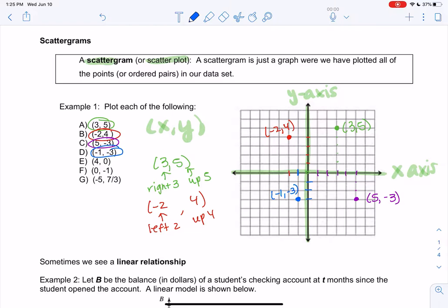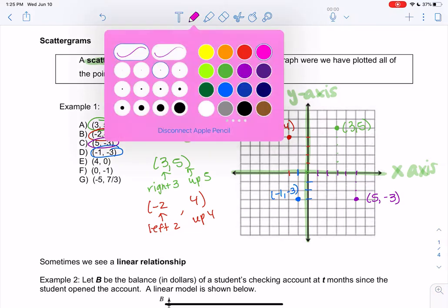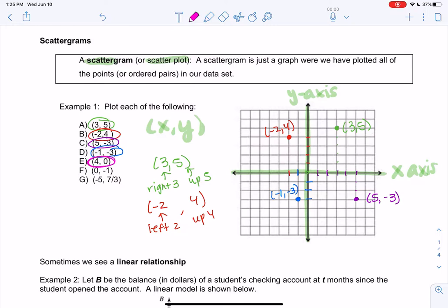A couple more. 4, 0 tells me to go over 4, and then since the second one is 0, it tells me not to go up or down. So just 1, 2, 3, 4. It'll be right there.